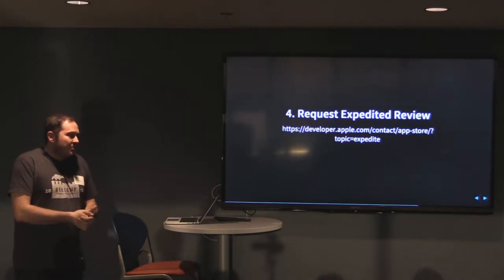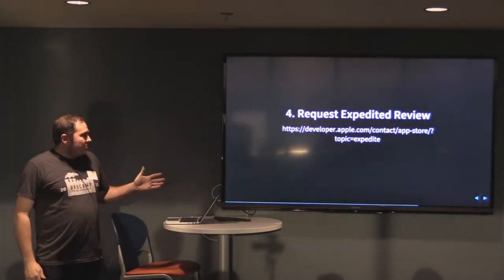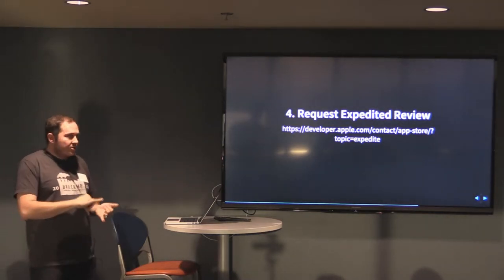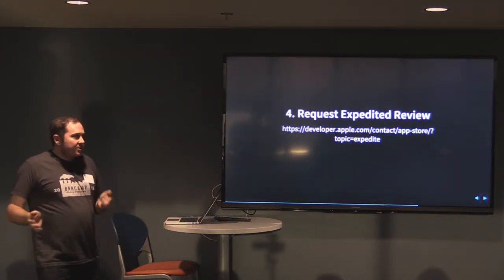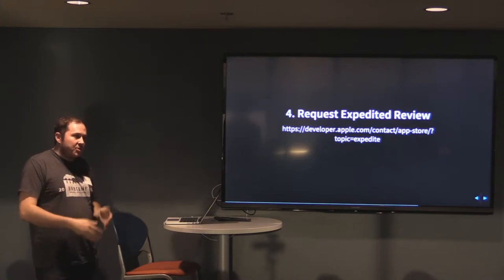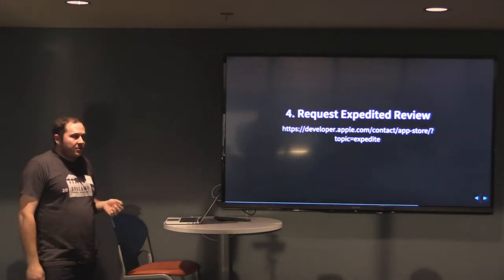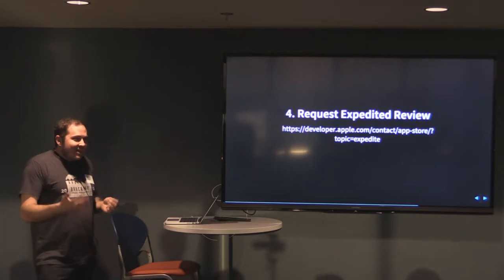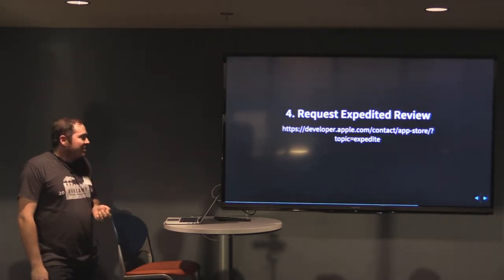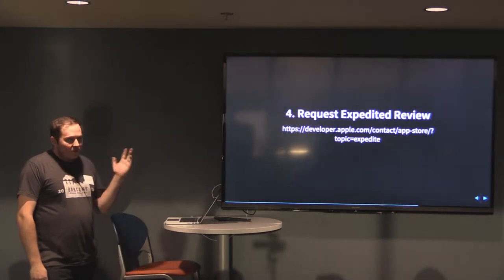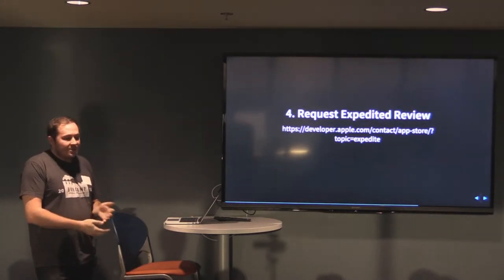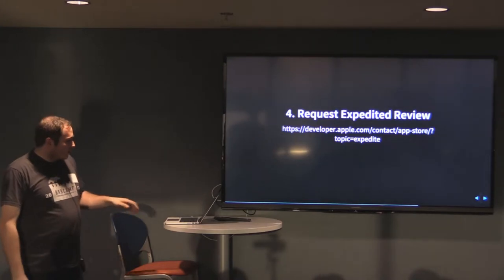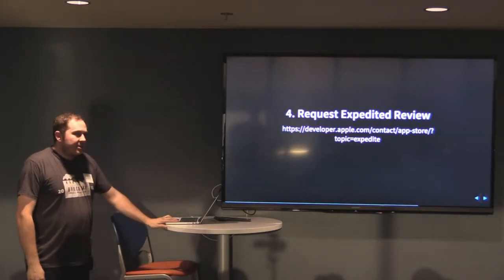Step four: expedited review. There's a process called expedited review — they'll do it for really bad bugs like this, or if you have a time constraint, like making an app for a conference with a set date. It's a little hard to find if you don't know to look for the word "expedited review." It took a little Googling, but we found it. It's basically a form you fill out, you give them the reason and how to reproduce the bug, and then you pray they expedite your review.